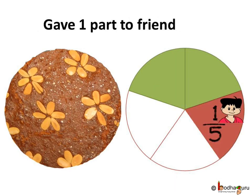He gave one piece out of his share, that is, one-fifth part out of the three-fifth parts to his friend. Now, how much was left with Aman after sharing with his friend?